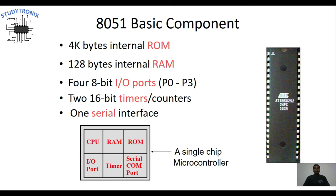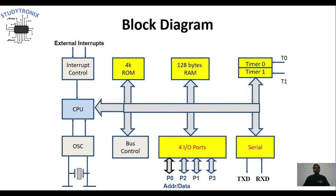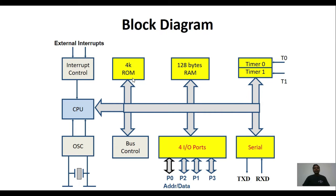This is the general block diagram of 8051, which includes all these peripherals. Starting with the CPU, we have all the peripherals: ROM, which is a 4-kilobyte memory space, and RAM, which is 128 bytes. The ROM is called program memory or code memory, whereas RAM is called data memory.